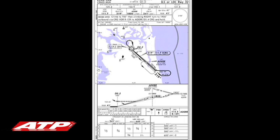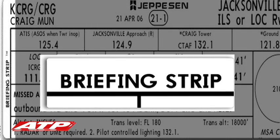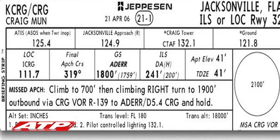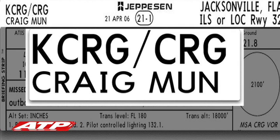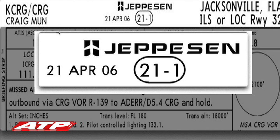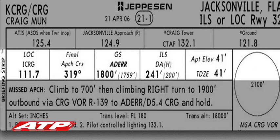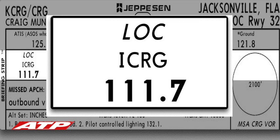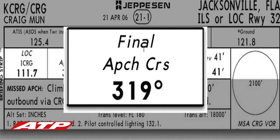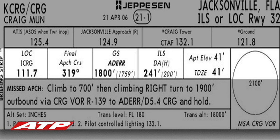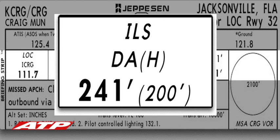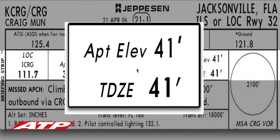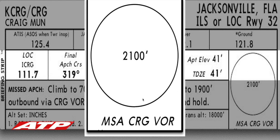The pilot conducts an approach briefing by reviewing the approach plate, placing special emphasis on the briefing strip. This is the ILS Runway 32 into Jacksonville, Florida, Craig Municipal Airport. Index number 21-1, 21 April 2006. The localizer frequency is 111.7 with a final approach course of 319. Glide slope altitude at Adair is 1,800 with a decision altitude of 241 feet MSL, which is 200 feet above touchdown zone elevation. The airport and touchdown zone elevation is 41 feet with an MSA of 2,100 feet.